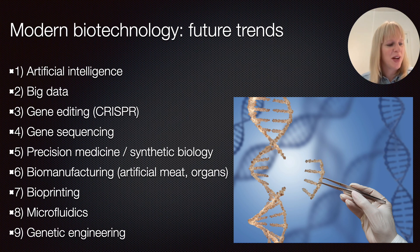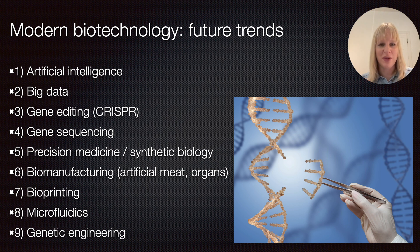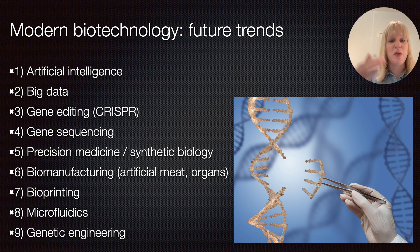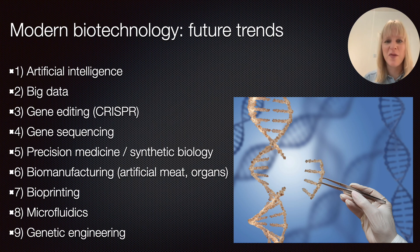Genetic engineering involves inserting new genetic information into existing cells to modify specific organisms for desired purposes — and it's more commonly employed than you might think, particularly in agriculture. It can give plants better resistance against viruses or herbicides, and can enhance nutrition. It's also widely used in research with animal models to test pharmaceuticals before human trials, which is a critical step in bringing drugs to market. Hopefully this video gave you a flavour of the history of biotechnology — I have other videos that go more in depth on specific topics. Thank you for watching.